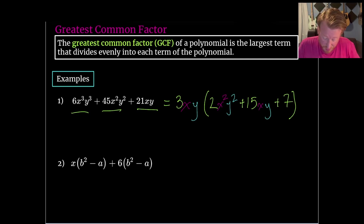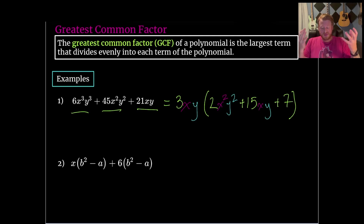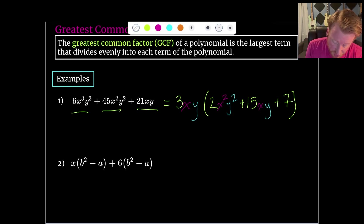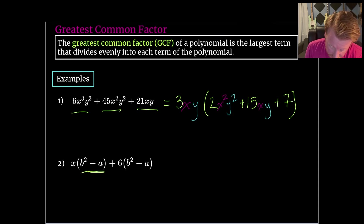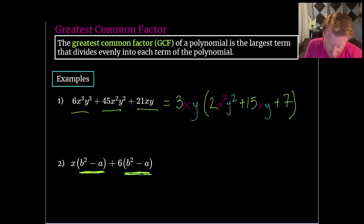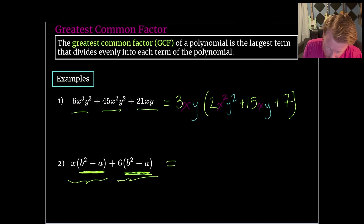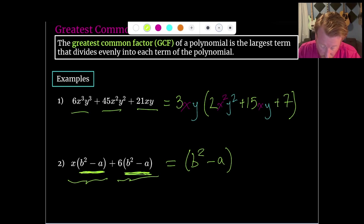For this next example, we've got something that looks a little bit different. The terms aren't just single objects being multiplied together — now there are some things in parentheses with subtraction. We're going to view those things in parentheses as full terms. So this is a term of the polynomial, and this is a term of the polynomial. We notice that each term under those squiggly lines both have a b² minus a in common, so we can factor that out to the front.